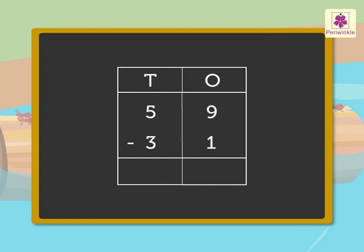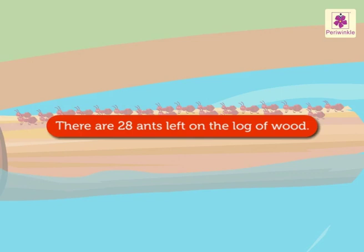We always subtract the ones first and then the tens. 9 minus 1 is equal to 8. 5 minus 3 is equal to 2. Thus, the difference of 59 and 31 is 28.